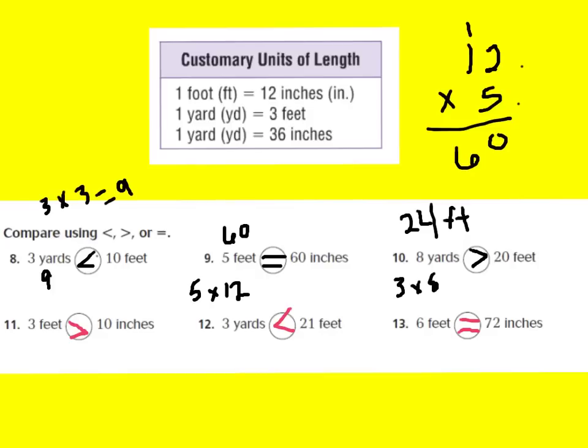For number 11, you should have said that 3 feet is greater than 10 inches. I need to see how many inches are in 3 feet: in 1 foot there are 12 inches, so 3 times 12 gives me 36 inches in 3 feet. Since 36 is bigger than 10, 3 feet is greater than 10 inches.